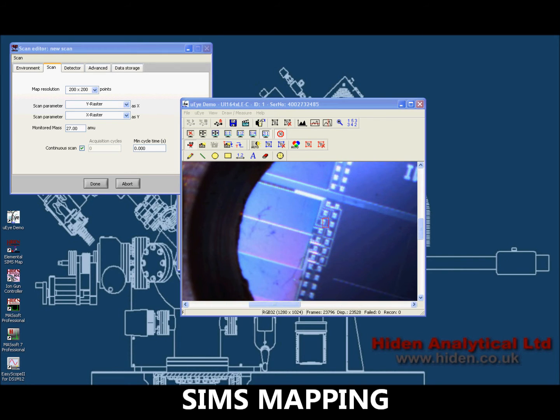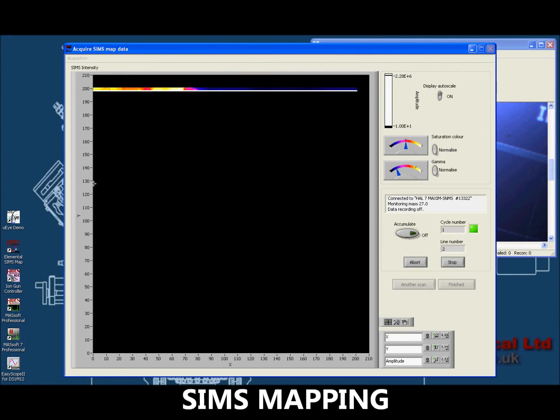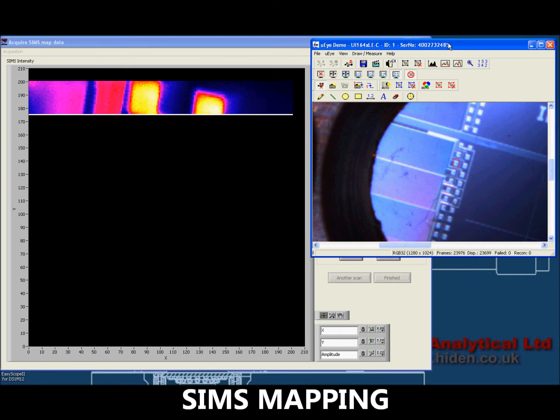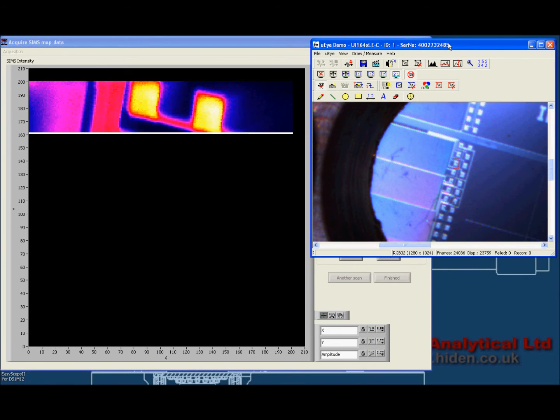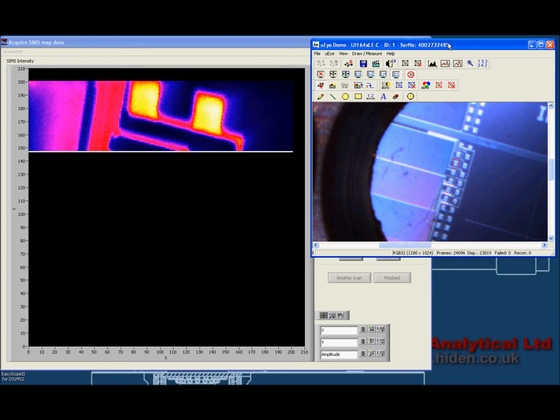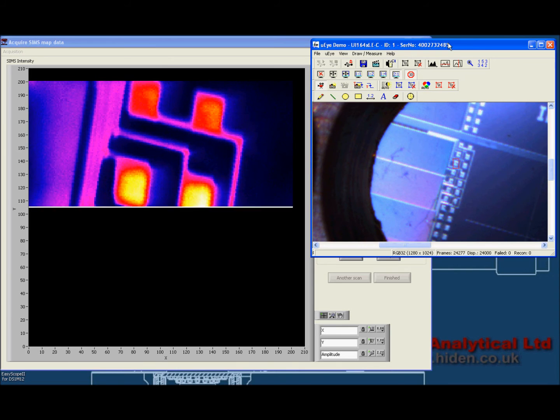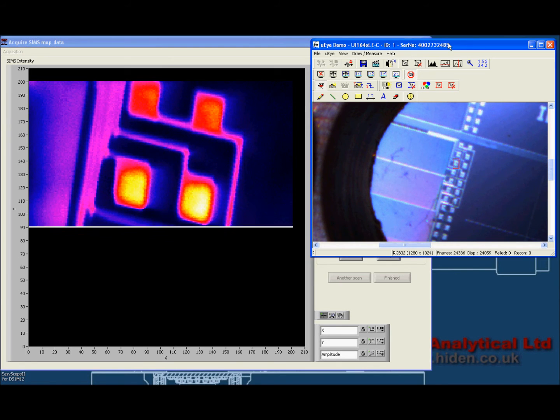SIMS imaging is a very powerful tool. Here we see a Mass27 aluminium image of the bond pad structure on a semiconductor wafer. The primary ion beam here is argon 5kV from the IG20 ion gun. The region of interest is towards the centre of the optical image and the individual pads are approximately 80 microns across.